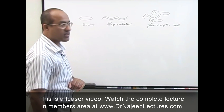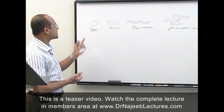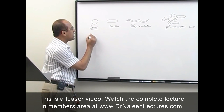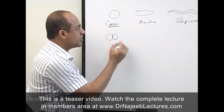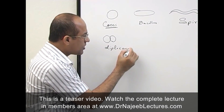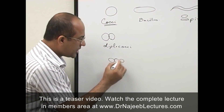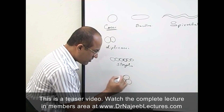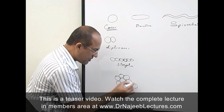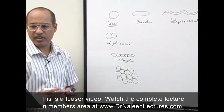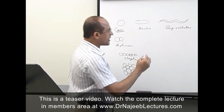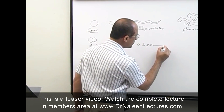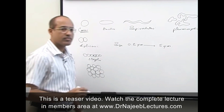Another very basic concept is that cocci may be arranged in different arrangements. Some cocci are arranged as diplococcus, some are arranged as chains — these are streptococci — and some are arranged as clusters like a bunch of grapes — that is staphylococcus. The size range of bacteria varies from 0.2 micrometers to 5 microns.